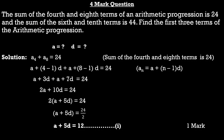Now the four-mark question: the sum of the fourth and eighth terms of an arithmetic progression is 24, and the sum of the sixth and tenth terms is 44. Find the first three terms of the AP. To find three terms we need first term a and common difference d. This question has two conditions; we form two equations and solve for a and d.